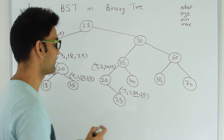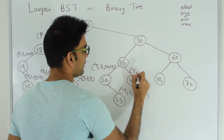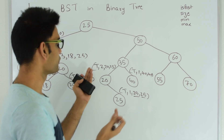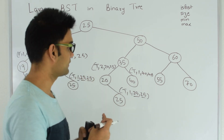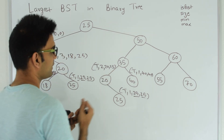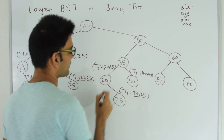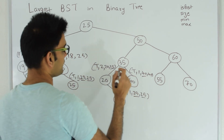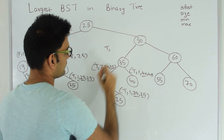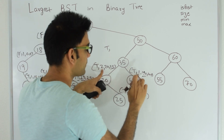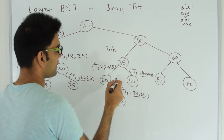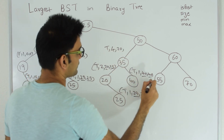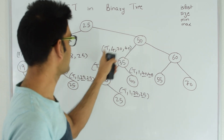Node 35 gets true from both left and right. It verifies: the max of the left side, 25, is less than or equal to 35 — true; and the min on the right side, 40, is greater than 35 — also true. So with 35 it continues to be a BST. Node 35 returns to 50: true, size 4 (2+1+1), minimum 20, maximum 40.